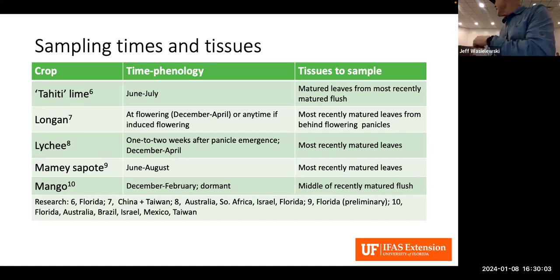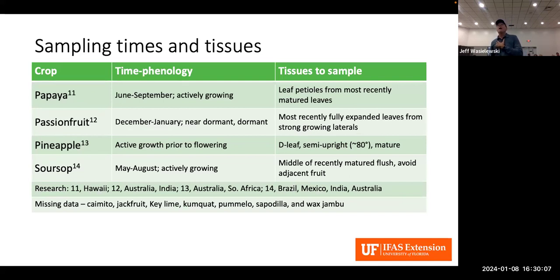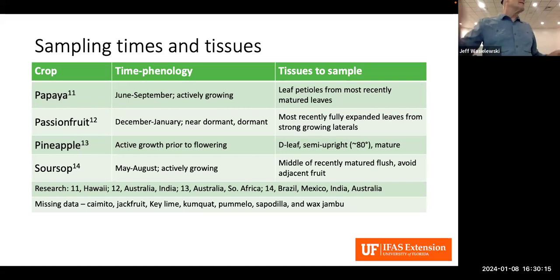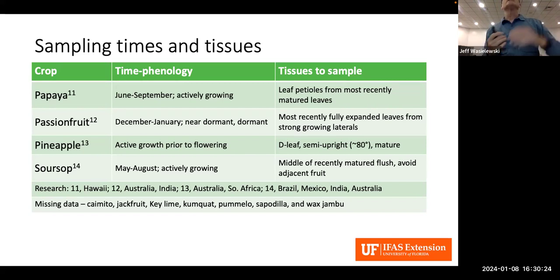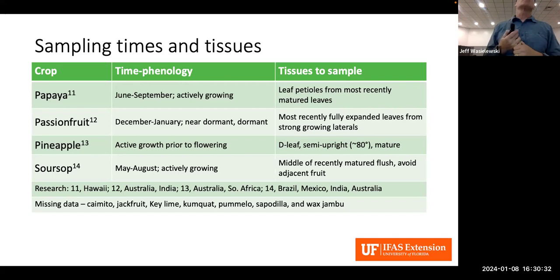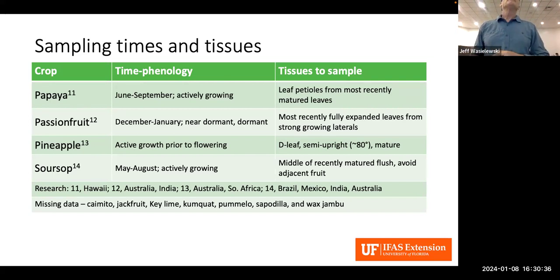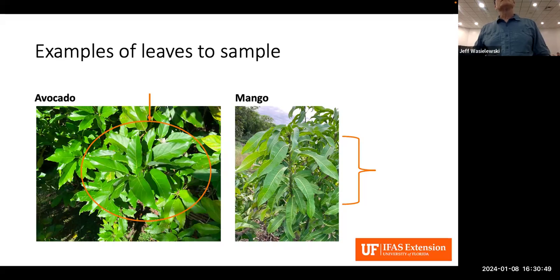Papaya is quite different — you actually sample the petioles, taking the leaf blade off and processing only the petioles. Passion fruit sampling is when the plant is near dormant, using the most recently fully expanded leaves from strong growing laterals. For avocado, the third through sixth leaf back from the terminal end are the most recently matured leaves. For mango, you would select below the top three or four leaves.